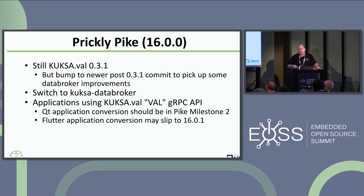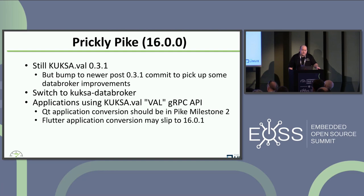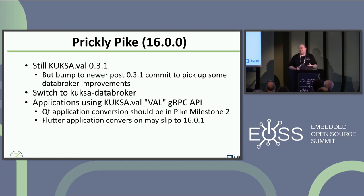Octopus was a few months ago and we're working on the Prickly Pike release, which is hopefully going to release at the end of the month. We're sticking with Kuksa.val 0.3.1, but I'm going to bump to a slightly post-0.3.1 commit level, mostly to pick up data broker changes. We're going to switch to the Kuksa Data Broker as the default VSS implementation — basically future-proofing. The Bosch team is focusing on the Rust implementation because they think it's more realistic to productize. It has a gRPC API, which is a much more modern IPC mechanism than doing all the string conversion and JSON with the WebSocket API. Protobufs and gRPC make way more sense, and as a project AGL is trying to push people in a protobuf direction.